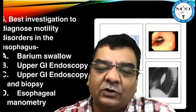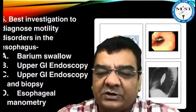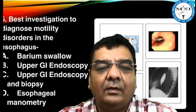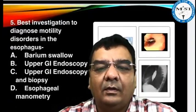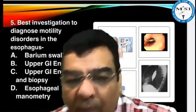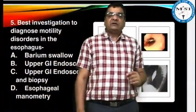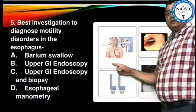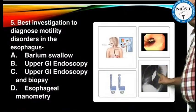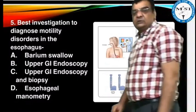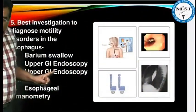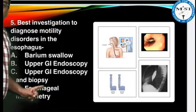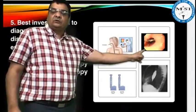The next question: what is the best investigation to diagnose motility disorders in the esophagus? The options given are: barium swallow — as shown in this contrast study where contrast is going into the esophagus — upper GI endoscopy, upper GI endoscopy with biopsy, and manometry.